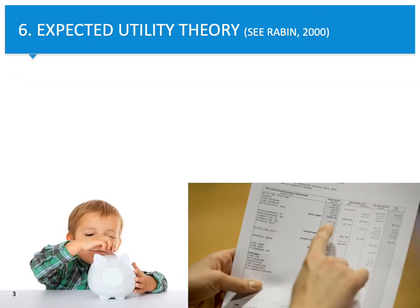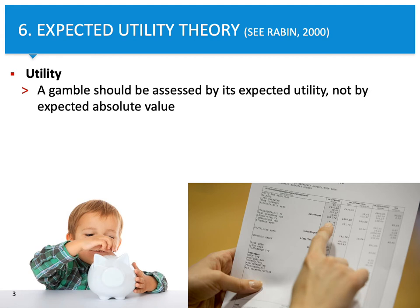Typically, when we discuss expected utility, we talk about lotteries, about winning or losing money. That's probably the best way of explaining this. When we are talking about utility, we can take into account a gamble, and in this case we talk about expected utility, because that involves probabilities.